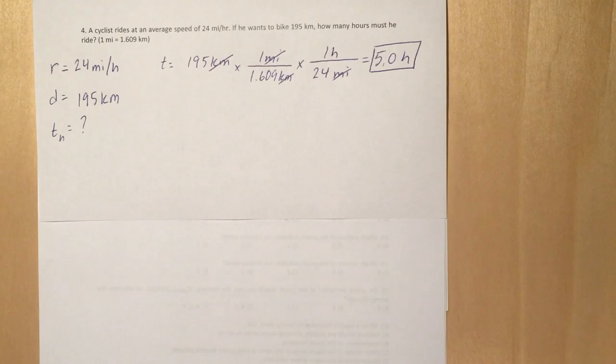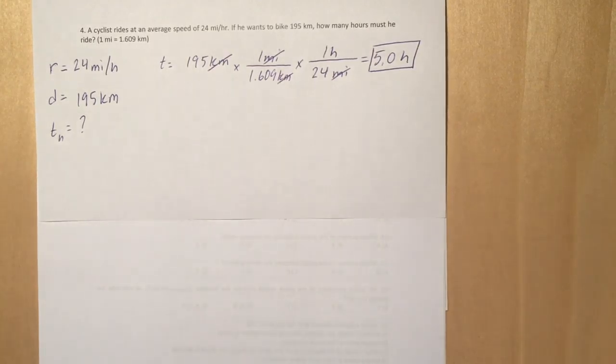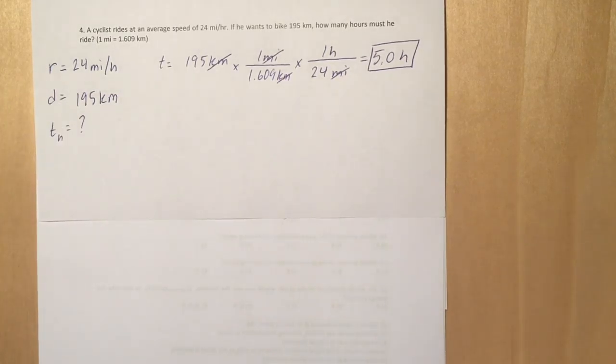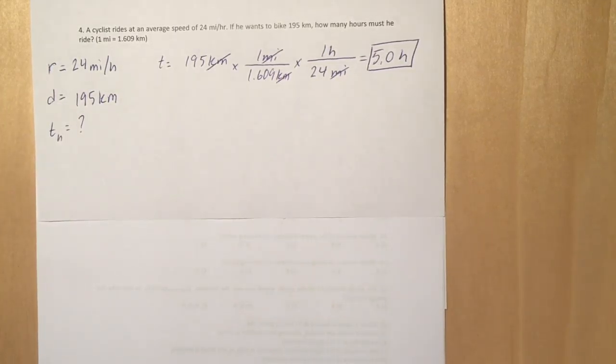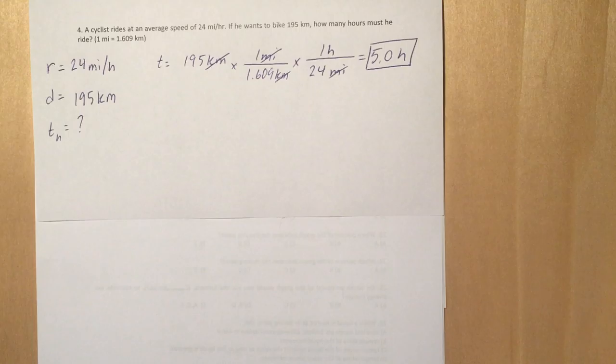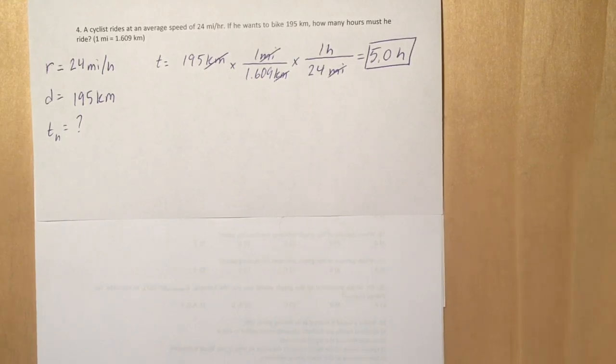So what I've done, I've set this problem up just like I set them all up. I put the given numbers over here on the left, the rate at 24 miles per hour, and hopefully you can see by now that that's a conversion factor. We need one more conversion factor, the miles to kilometers conversion factor, which is given in the problem.